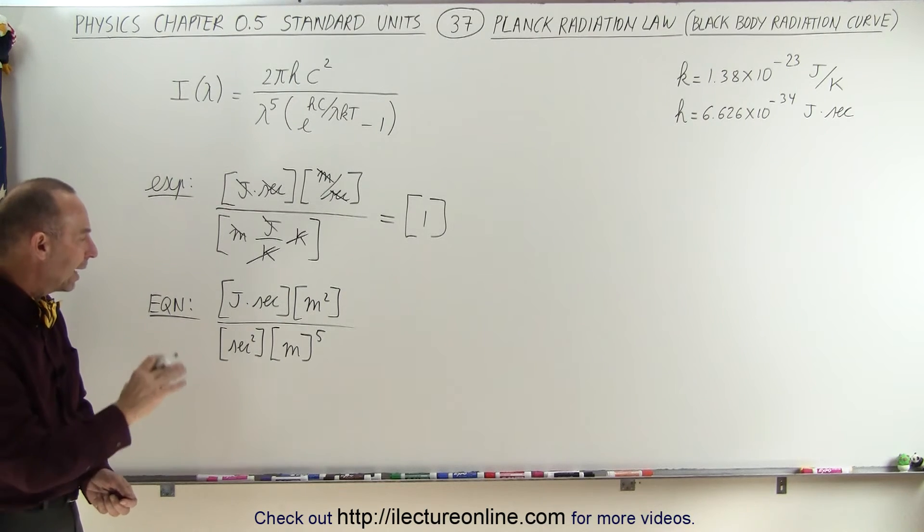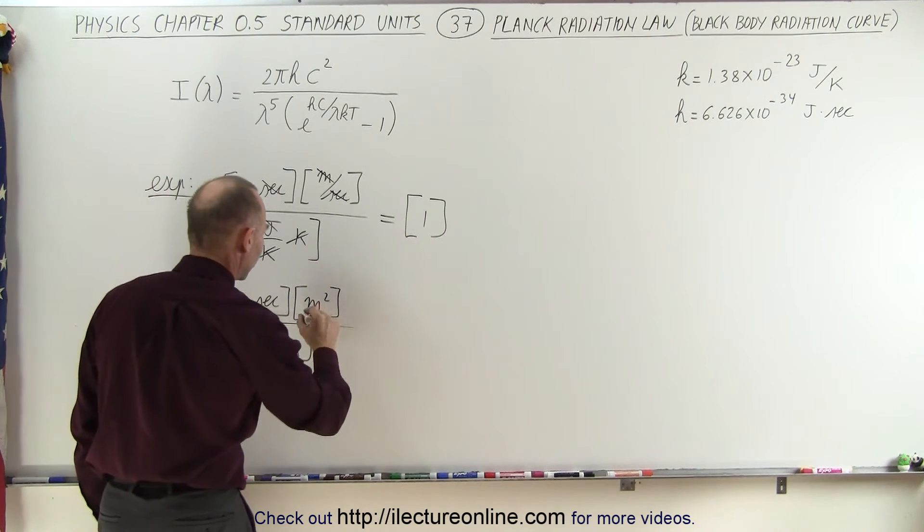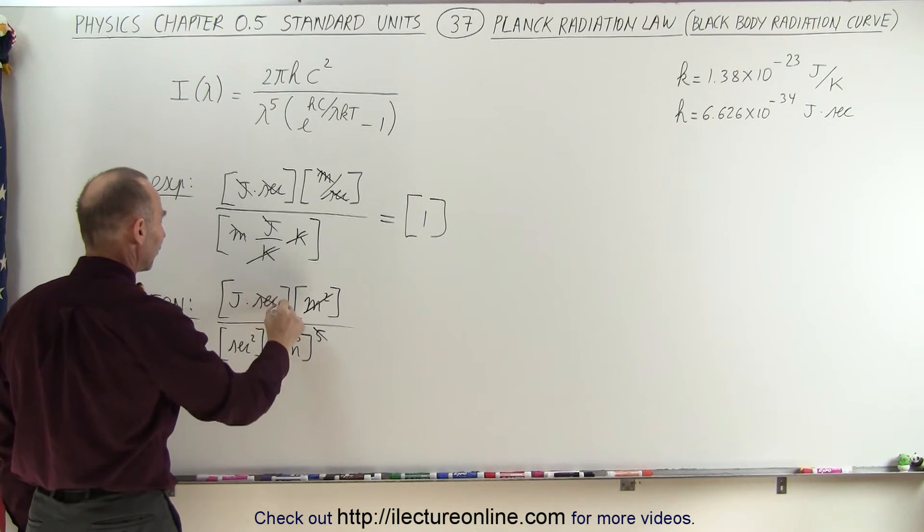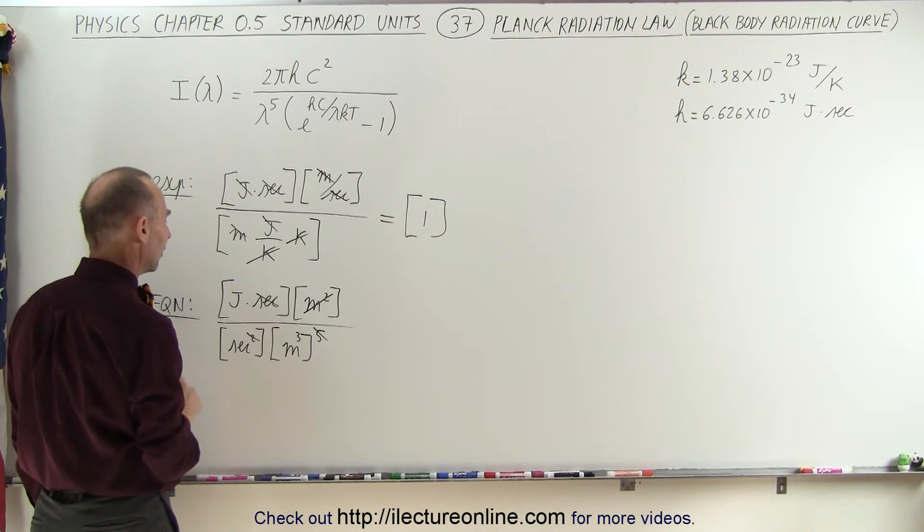So, now we have meters squared and meter to the fifth power. So, this cancels out, and this becomes meters cubed. We have second to the first power, second to the second power. That cancels out.